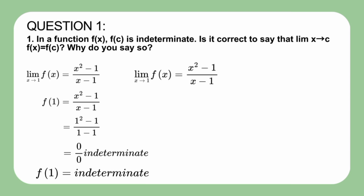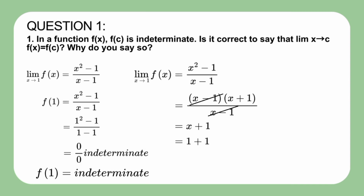Let's explore it further. Starting by factoring x squared minus 1, we can simplify the function and write it as f of x equal to x plus 1, by removing the indeterminate form. Then we can evaluate the limit as x approaches 1, which gives 1 plus 1, equal to 2.